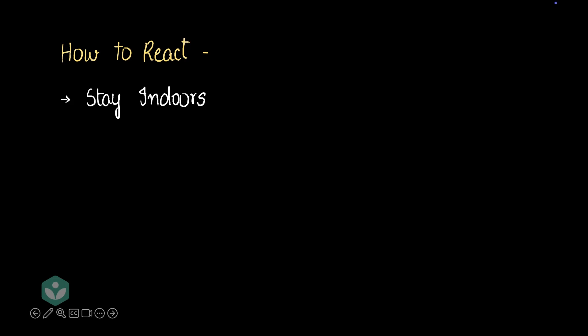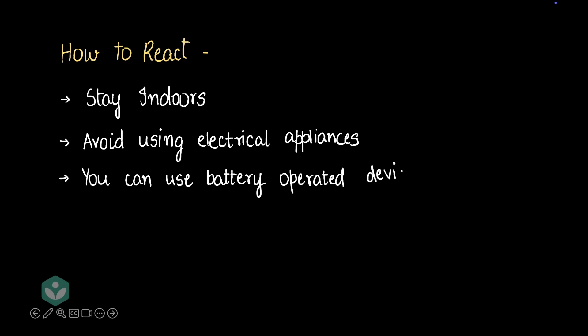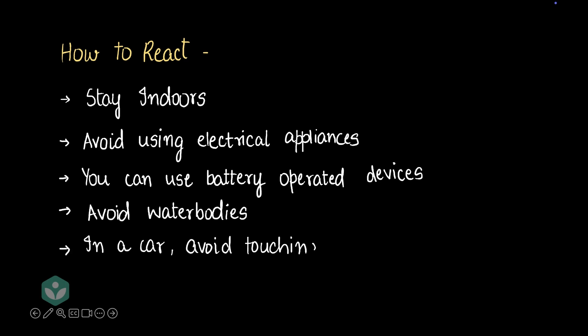So if there's lightning, how should we react? Stay indoors. Avoid using any plug-in electrical appliances — those plugged into main wall sockets. You can, however, use battery-operated devices because those are not connected to your electricity line, but save your phone battery for emergencies. Avoid water bodies — don't stay close to a pond, lake, sea, or rivers, because if lightning strikes water and you are in contact with that water, it could harm you very badly. If you're in a car, you need not worry too much apart from avoiding touching metal parts — just sit inside the car and you will be fine.